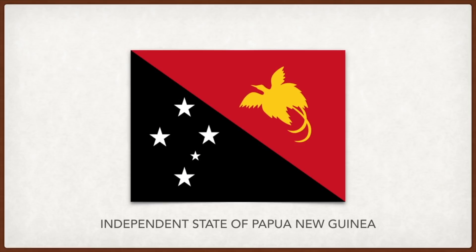Papua New Guinea: red and black have long been traditional colors of many Papua New Guinea tribes. The bird of paradise symbolizes the country's emergence into nationhood. The stars are the Southern Cross, a constellation notable in Southern Hemisphere countries, signifying the country's historical relationship with other nations of the South Pacific.